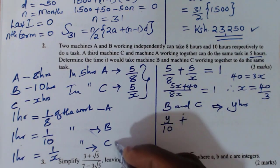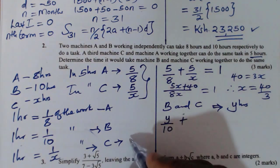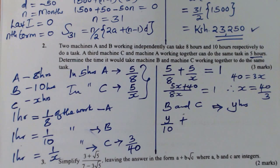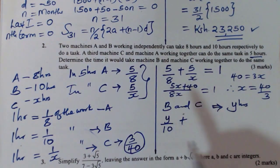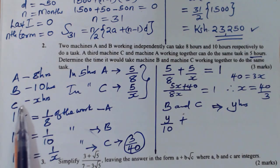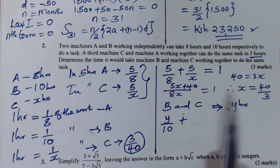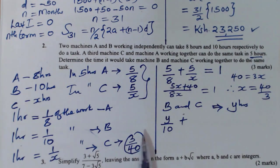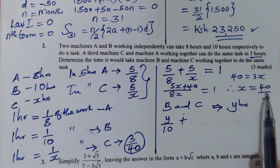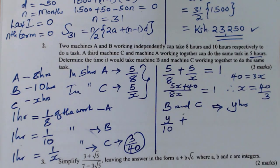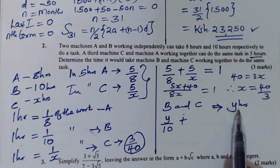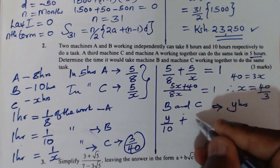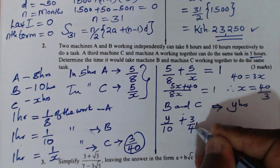For machine C: we obtained that C takes 40 over 3 hours, so in one hour C will do one over X where X is 40 over 3, which equals 3 over 40 of the work. You need to be very careful here. In Y hours, C will do 3 over 40 times Y, which gives 3Y over 40.